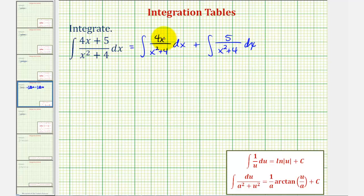Now for the next step, let's go ahead and factor out the four and factor out the five. So we'd have four times the integral of x divided by x squared plus four plus five times the integral of one divided by x squared plus four.